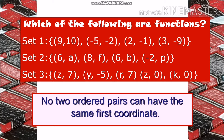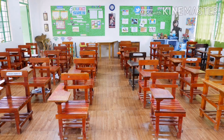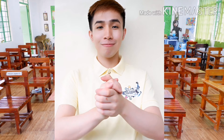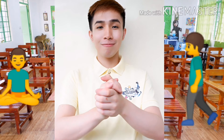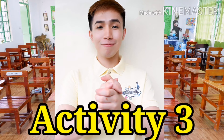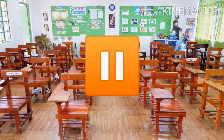Finally, set 3: (z,7), (y,−5), (r,7), (z,0), and (k,0) is a mere relation because z is repeated twice. Stand if it's a relation and remain on your seat if it's a function. Please refer to activity 3 of your module and pause the video.